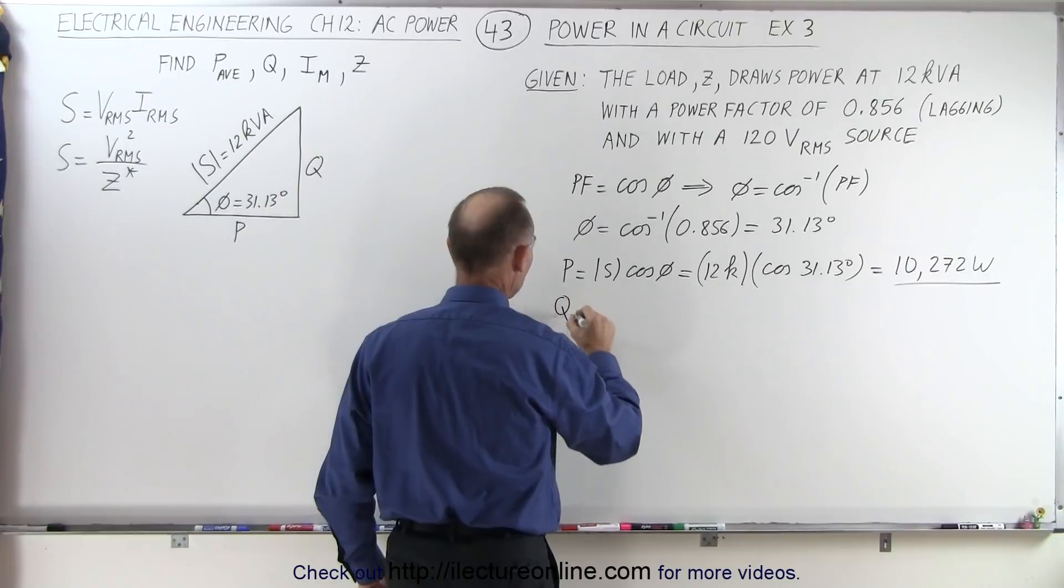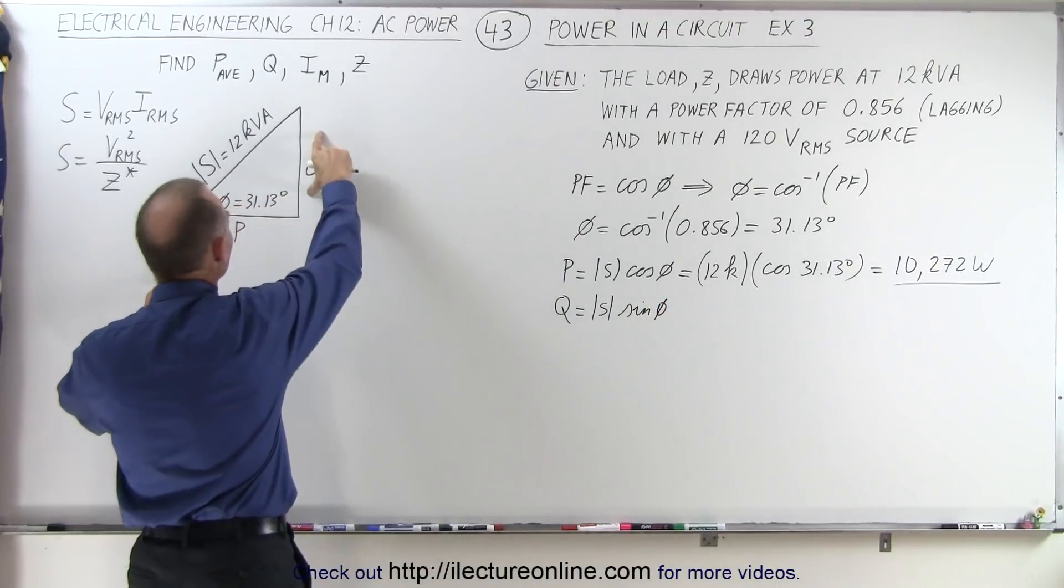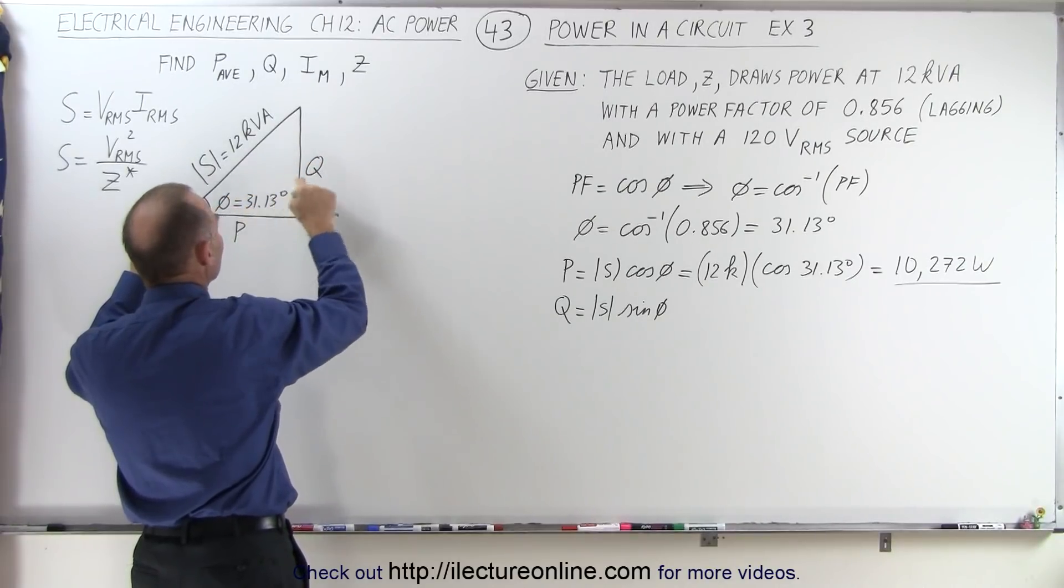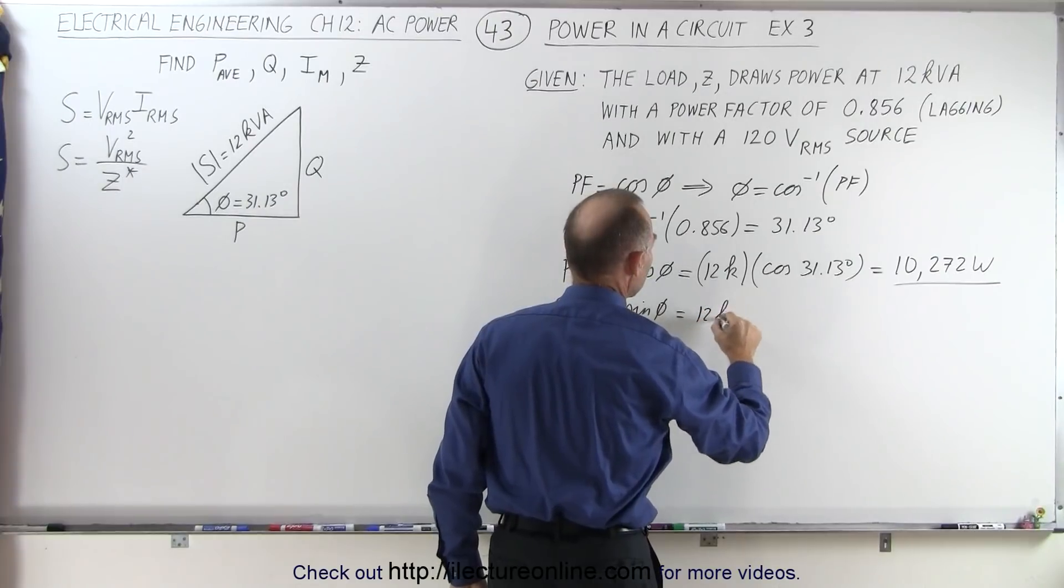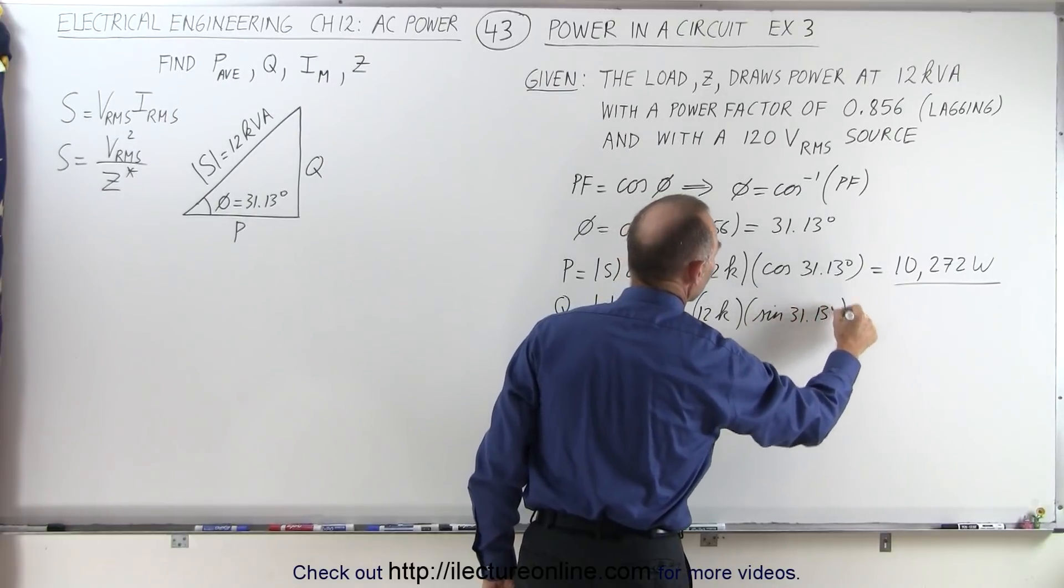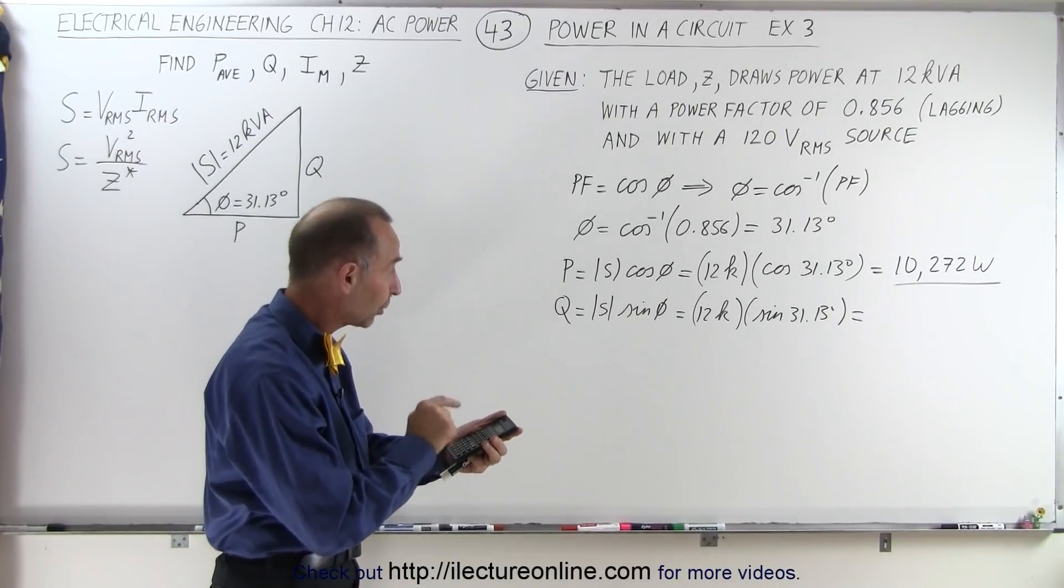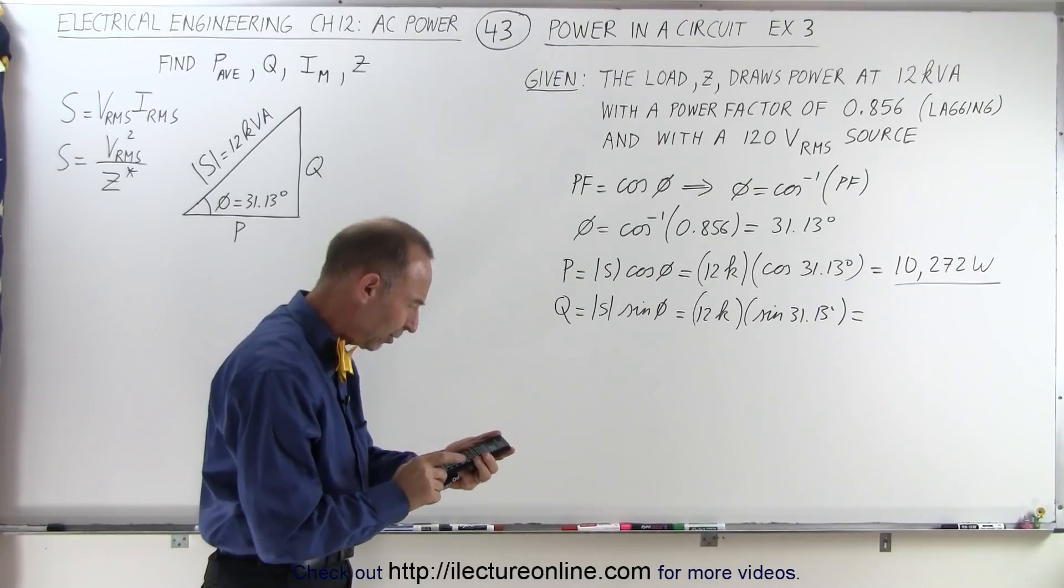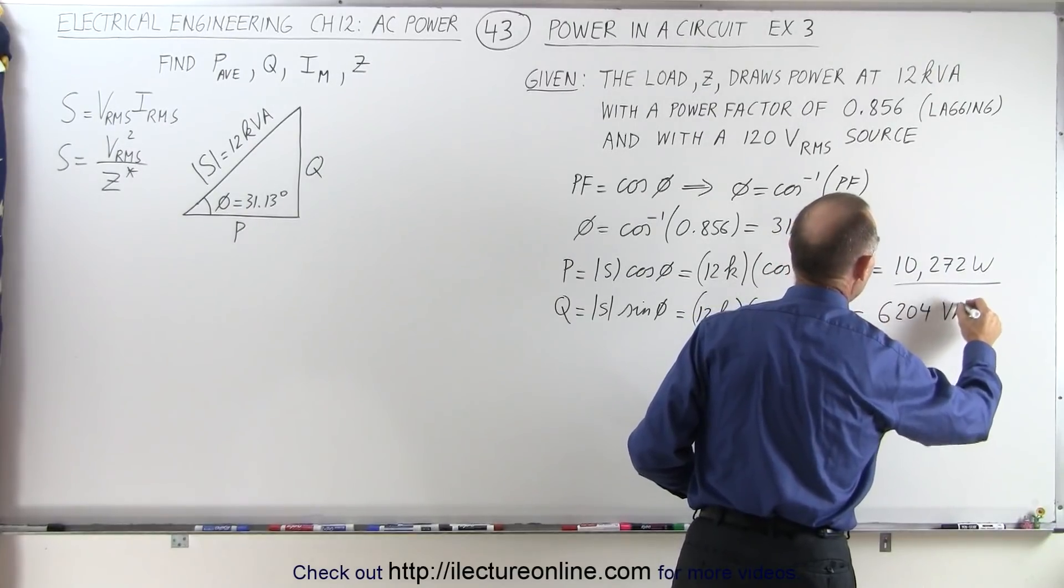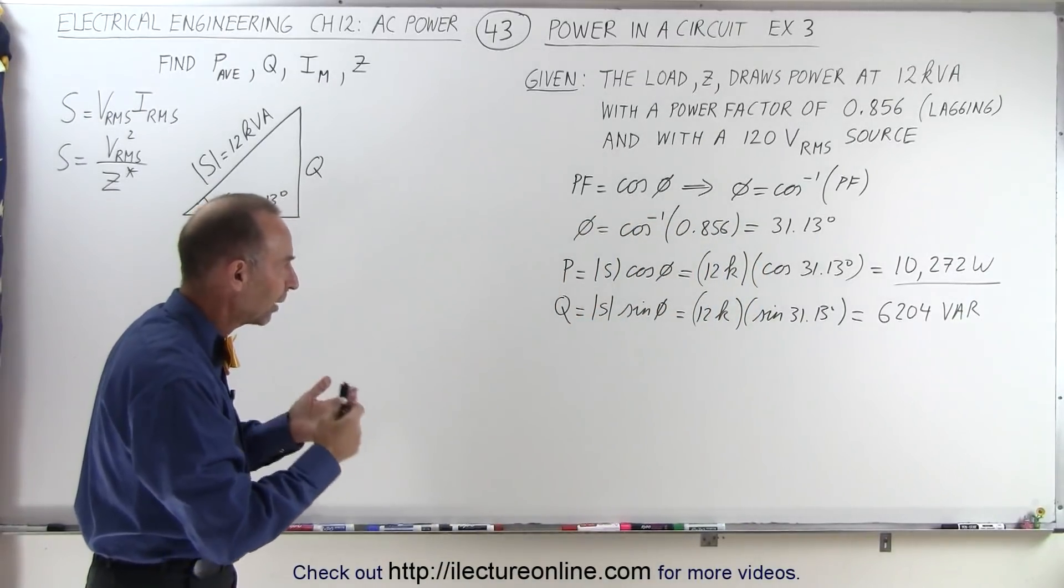Now let's find the reactive power, Q, which is equal to S multiplied times the sine of the phase angle. Because in this case, we're dealing with the opposite side of the phase angle. So we take the hypotenuse times the sine gives us Q. So this would be equal to 12k times the sine of 31.13 degrees. And that gives us 6,204 VAR, volt ampere reactive power.